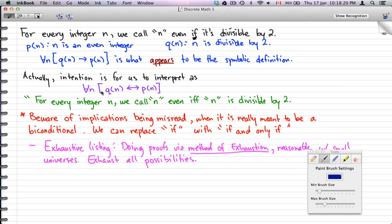So in other words, for every integer n, we call it even if and only if n is divisible by 2.